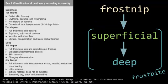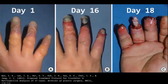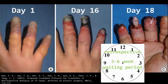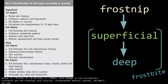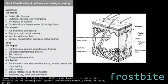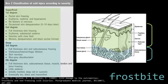Frostbite is separated into four degrees based on how deep the tissue injury goes. The issue is it can take days to weeks — sometimes up to three to six weeks — before tissue damage really demarcates, so it's more of a retrospective classification. Therefore, we split frostbite into superficial and deep. Superficial, which includes first and second degree, involves the epidermis and dermis, whereas deep injury includes subcutaneous tissue, and fourth degree involves muscle, tendon, and even bone — very deep.